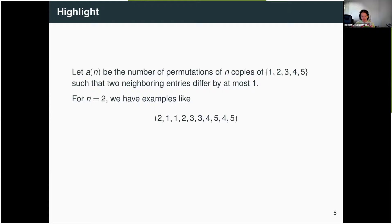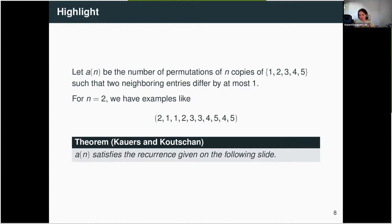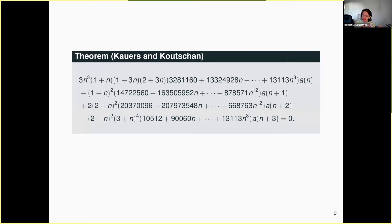However, the recurrence is too big to put on one slide — and that's one reason why no one ever guessed it. Manuel and Christoph were able to prove that this sequence satisfied this recurrence, which is a fourth-order recurrence where every term is being multiplied by a degree 14 polynomial. I had to leave out most of the recurrence because degree 14 polynomials with huge coefficients turn out to be a little unwieldy.